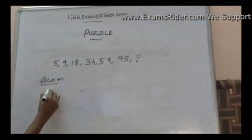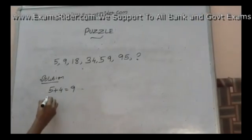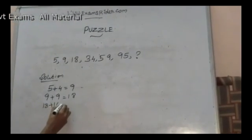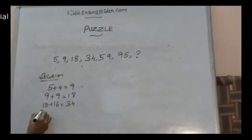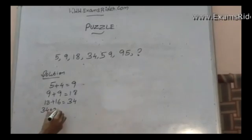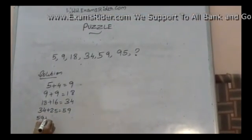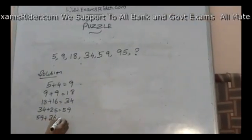5 plus 4 is equal to 9. 9 plus 9 is equal to 18. 18 plus 16 is equal to 34. 34 plus 25 is equal to 59. And 59 plus 36 is equal to 95.